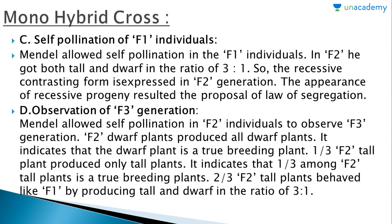To find the answer, Mendel allowed self-pollination of F1 individuals. In F2, he got both tall and dwarf plants in a ratio of 3:1. So the recessive contrasting form reappears in the F2 generation. This reappearance of recessive progeny resulted in the proposal of the law of segregation.